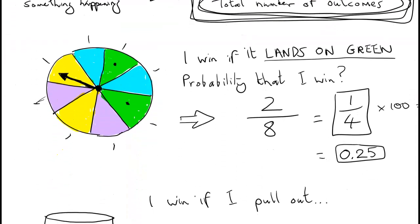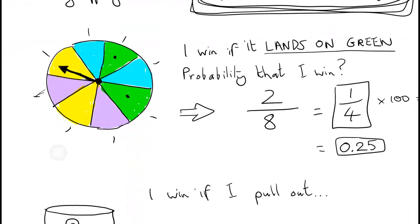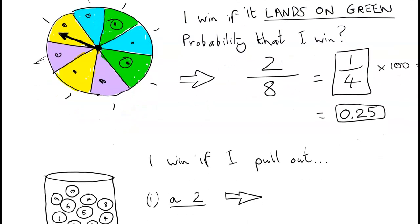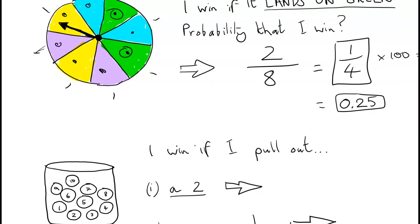If you were a gambling person you wouldn't put a lot of money on winning this game — in basic English, there are more slots that lose it for you than win it for you. There are 6 that lose and 2 that win, so you're unlikely to win.